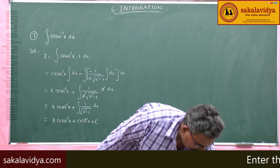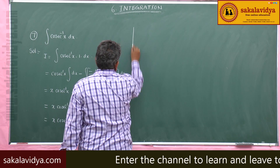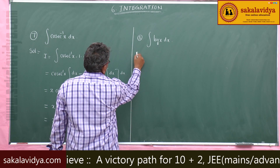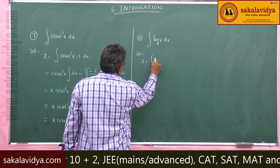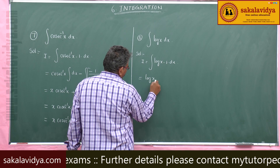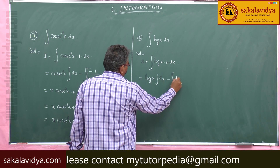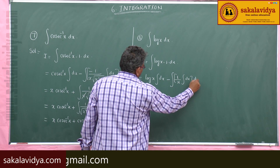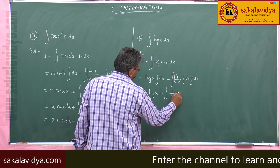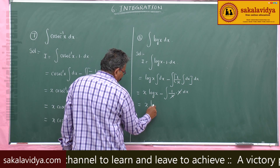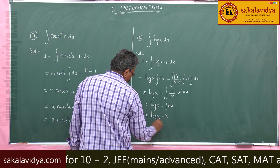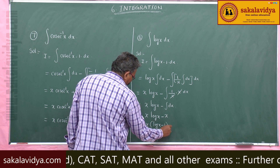Now let us move to the logarithmic. Integral of log x dx. Let I equal to log x into 1 dx. Here 1 is the algebraic function and log x is the logarithmic function. First function is log x, integral of dx, minus derivative of log x which is 1 by x, into integral of dx, and whole dx. So, x log x minus integral of 1 by x into x dx. This x and x get cancelled, giving x log x minus integral dx, which is x log x minus x. So this is x common log x minus 1 plus constant of integration.